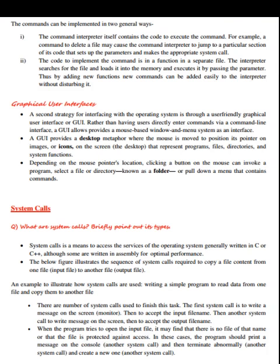Graphical user interface: a second strategy for interfacing with the OS is through a user-friendly GUI. Rather than having users directly enter commands, a GUI provides a mouse-based window and menu system. It provides a desktop metaphor where the mouse is moved to position its pointer on images or icons on the screen — representing programs, files, directories, and system functions. Depending on the mouse pointer location, clicking a button can invoke a program, select a file or directory (folder), or pull down a menu containing commands.